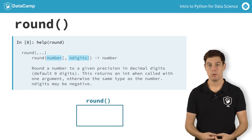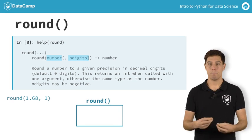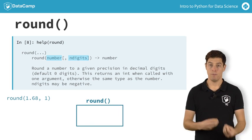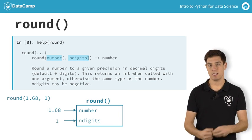When you call the function round with these two inputs, Python matches the inputs to the arguments. Number is set to 1.68, and n digits is set to 1.